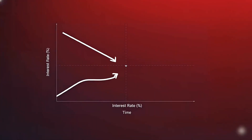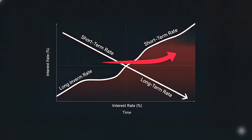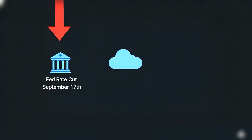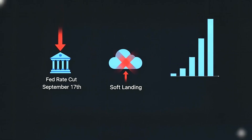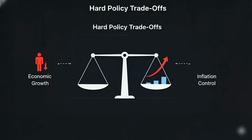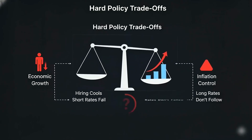Now the pressure builds. The yield curve — the relationship between short and long rates — steepened fast after a long inversion. The Fed cut once on September 17th, while core inflation still sat above target. That mix doesn't appear in soft landings. It appears when policy trade-offs turn hard, so look at what that signals.